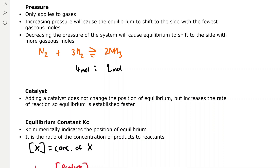For pressure, this only applies to gases. Increasing the pressure will cause the equilibrium to shift to the side with the fewest gaseous moles, because this opposes the change and decreases the pressure. Decreasing the pressure causes equilibrium to shift to the side with more gaseous moles. For example, in N2 + 3H2 → 2NH3, the left-hand side has 4 moles of gas (1 mole N2 + 3 moles H2) and the right-hand side has 2 moles of NH3.